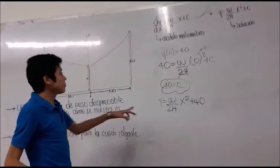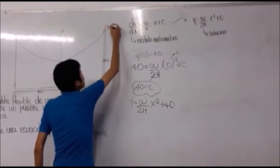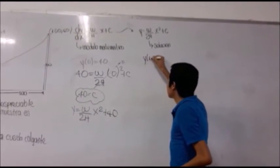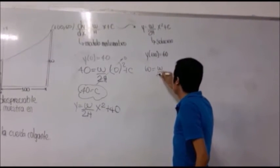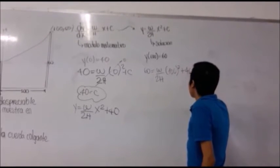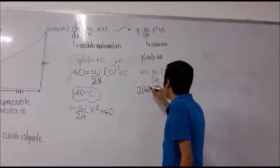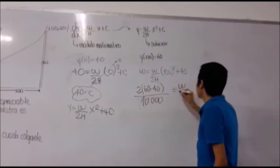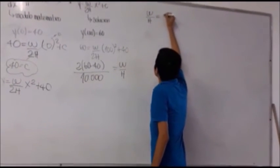Ahora tenemos que hallar el despejado de 2H en cualquier punto. Tenemos una coordenada final que sería (100, 60). Reemplazando en la solución, y(100) es igual a 60: 60 es igual a W sobre 2H por 100 al cuadrado más 40, lo que nos da 20 igual a W sobre 2H por 10.000. Dividiendo, W sobre H es igual a 2 por 20 sobre 10.000, y solucionando, W sobre H es igual a 1 sobre 250.